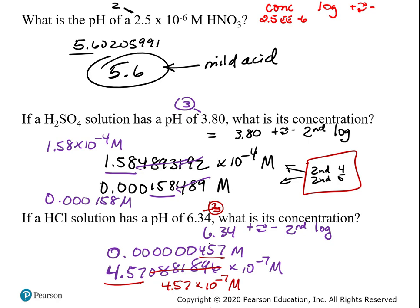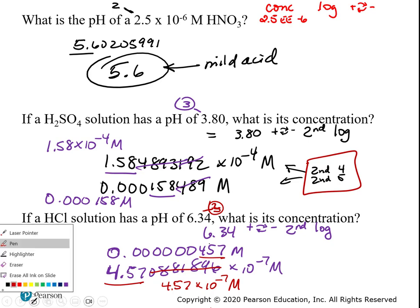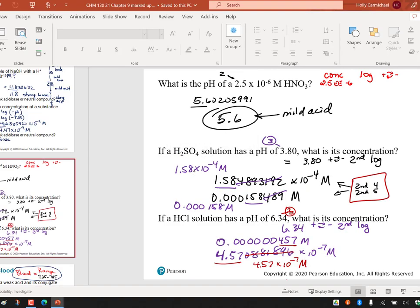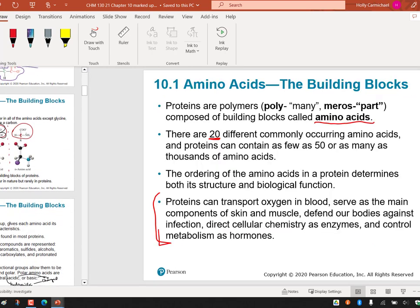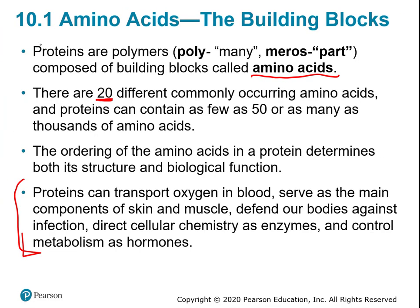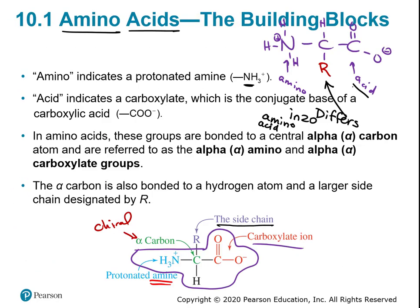You should be able to finish up chapter nine — there's an acids and base dynamic study module. Then we go into chapter 10. We were talking first about the building blocks of proteins, which are amino acids. Characteristics to remember: there's always a nitrogen — that's the amino name — and there's always a carbon with two oxygens on the opposite side. That's the acid side.